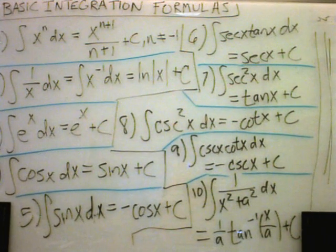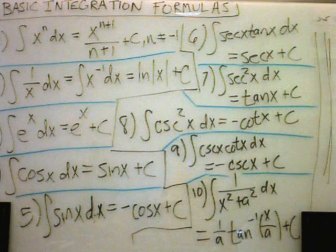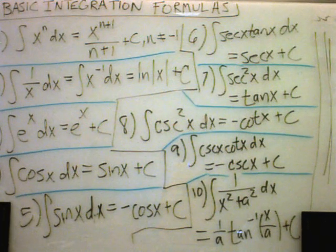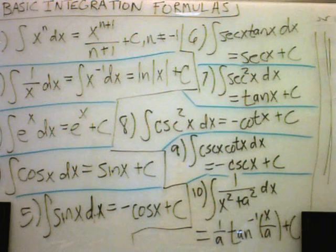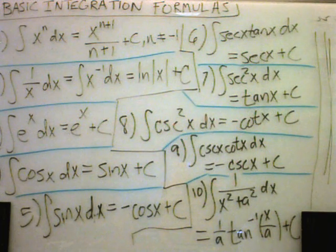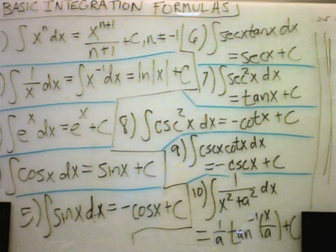So again, the first one says if you have x to a power, if you integrate, you basically just add 1 to the power and divide by that new power. That's valid for all values of n except for negative 1. If you use negative 1, you're going to be dividing by 0, and that's bad.